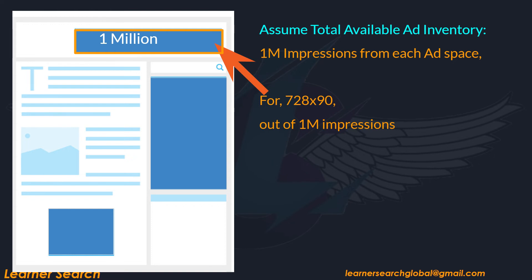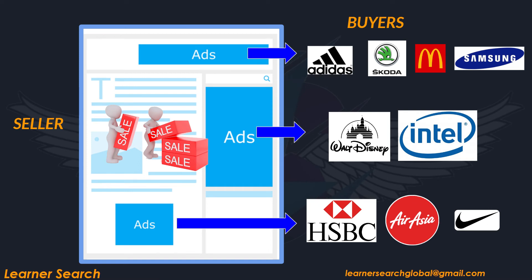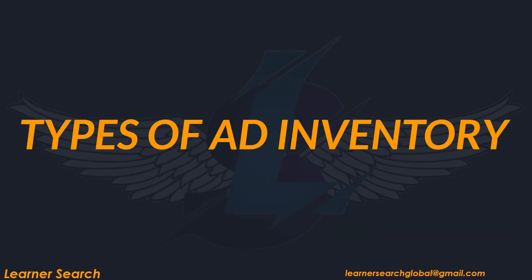Let's look at three different scenarios. In Case 1, a single advertiser Nike is prepared to purchase all 1 million impressions available for this ad space — all inventory has now been sold. In Case 2, Nike is only willing to purchase 5 lakh impressions; the remaining 5 lakh are sold to a new advertiser, Skoda — all impressions were sold. In Case 3, Nike purchased 5 lakh and Skoda is willing to buy 3 lakh impressions, leaving 2 lakh unsold impressions. Similarly, you sold other ad spaces to other advertisers according to their inventory requirements, and you may still have some unsold inventory.